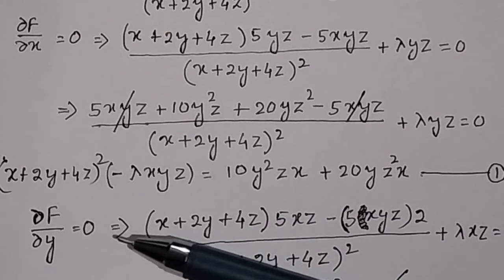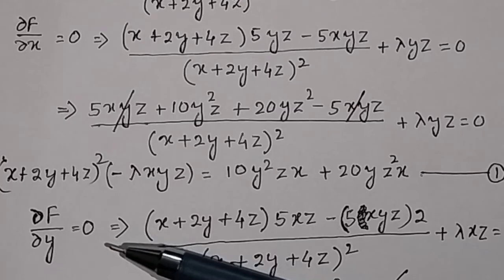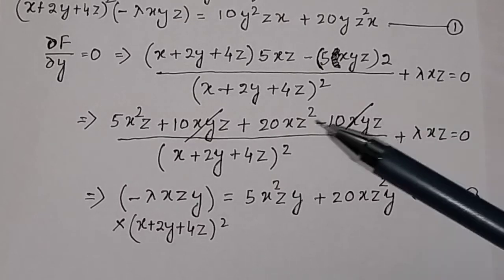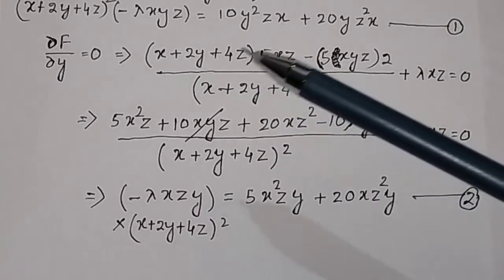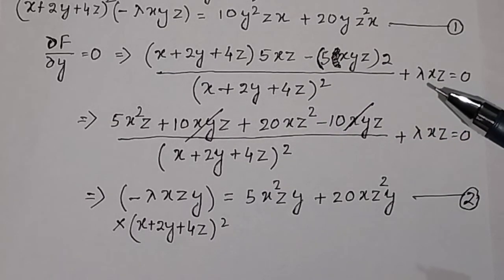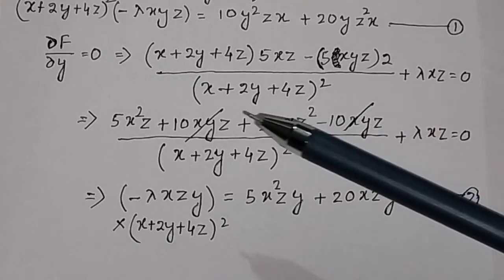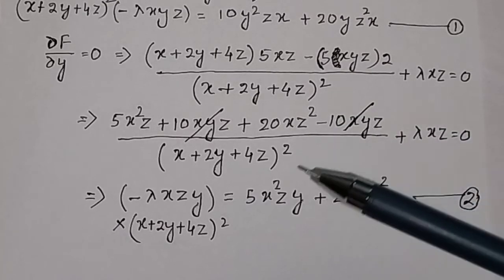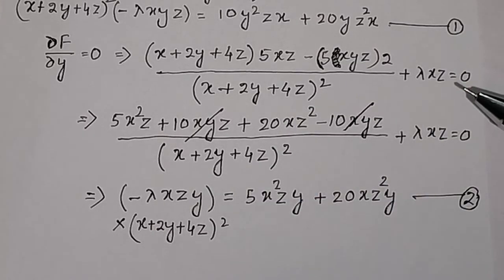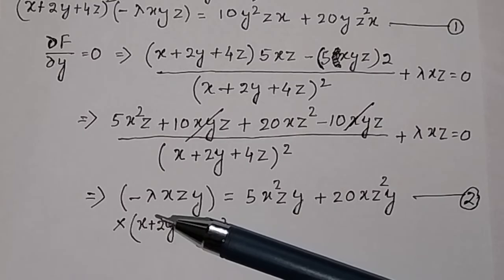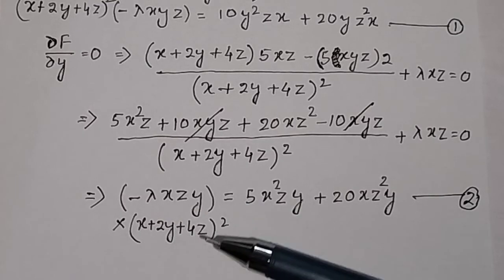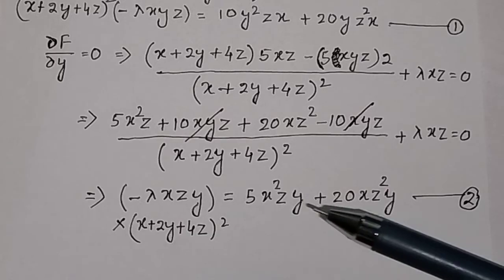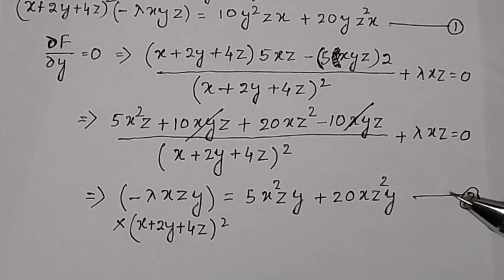Similarly, taking the partial derivative with respect to y and setting it equal to 0, we get the derivative of the first and second terms. Taking this to the right-hand side and multiplying by (x plus 2y plus 4z) squared, the term minus lambda times xyz times (x plus 2y plus 4z) squared appears on the right. Multiplying y on both sides gives equation number 2.